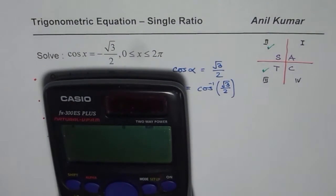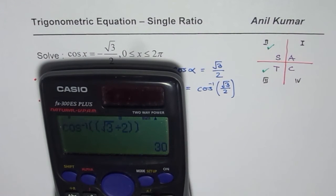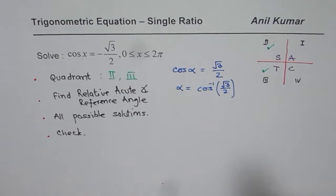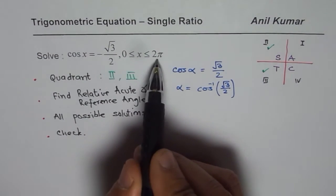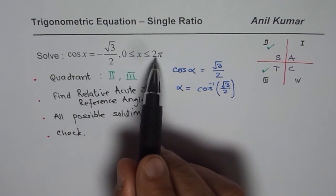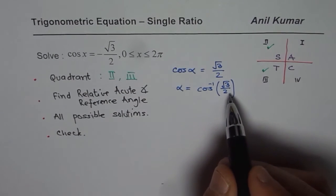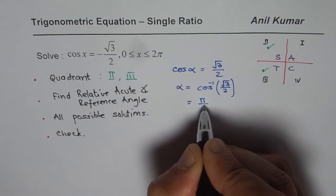At this stage you can use a calculator or a special triangle. On the calculator: shift, cos inverse, then √3 divided by 2. What you get is 30 degrees. Our domain is in radians, zero to 2π, so we have to write the answer in radians. Thirty degrees is π/6, so the acute angle is π/6.